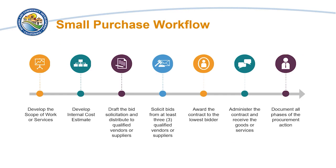The following workflow depicts the timeline of key events for small purchases. First, develop the scope of work or services for the goods or services being sought. Next, develop an internal cost estimate for the goods or services. After that, draft the bid solicitation and distribute to qualified vendors or suppliers. Solicit bids from at least three qualified vendors or suppliers and award the contract to the lowest bidder. Administer the contract and receive the goods or services. Last but not least, document all phases of each procurement action.